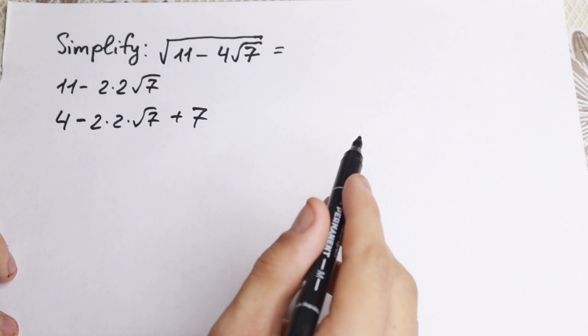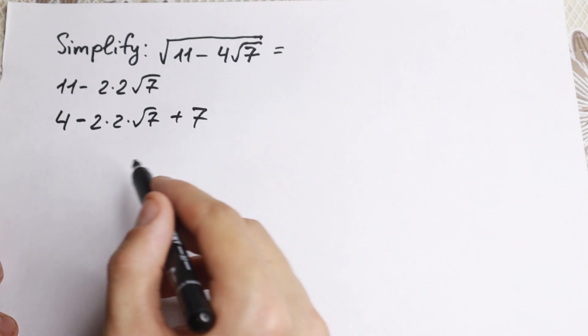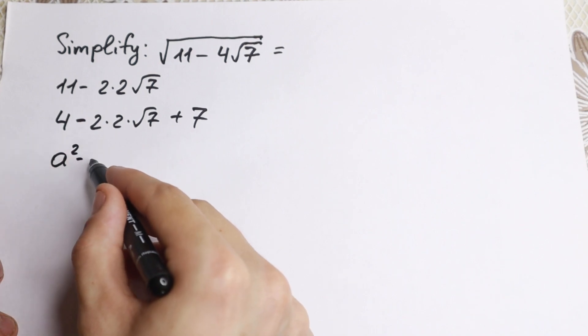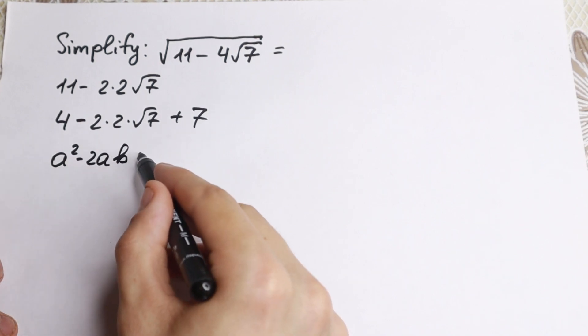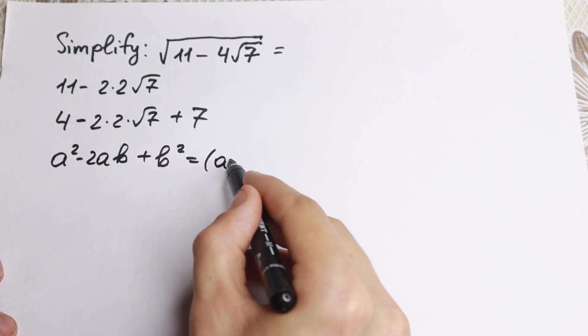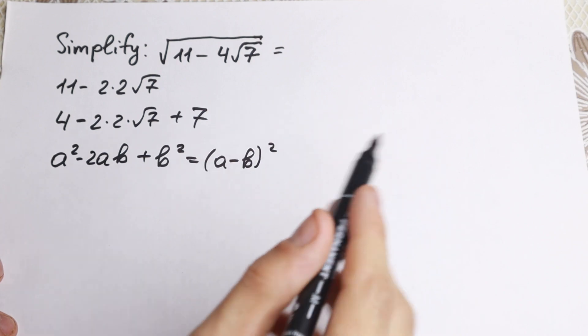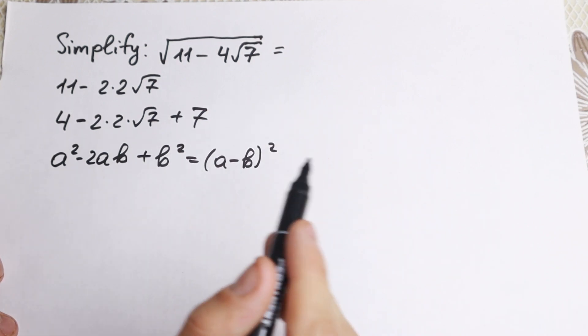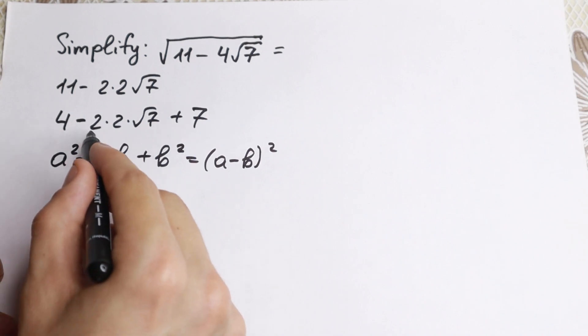Why do I write this? Because if we look closely at this expression, at the bottom I write this formula: a squared minus 2ab plus b squared, which is equal to (a minus b) squared. This is our school identity, we all know this formula. But why do I write this formula right here? Because if we look closely, we have 2 appearing multiple times.